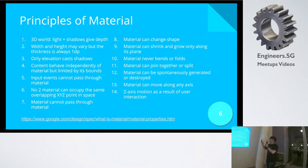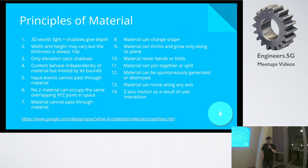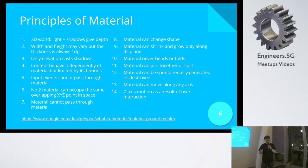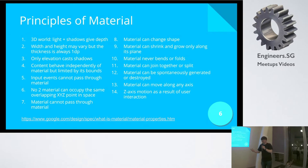Material design is a 3D world, so light and shadow give depth. Shadow is not just an effect. The width and height may vary, but the thickness is always 1dp, because material design runs on the xyz axis. So the thickness of every object is important. Elevation casts shadows. Content behaves independently of the material, but is limited by its bounds. No two materials can occupy the same overlapping xyz point in space.